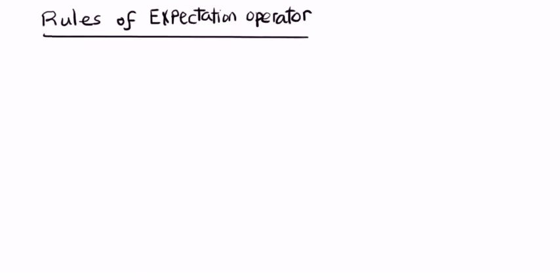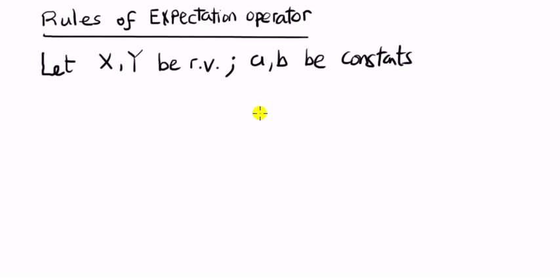Hi everyone, today I'm going to present the rules of the expectation operator. Let x and y be random variables, and a and b are constants.